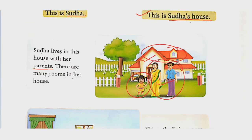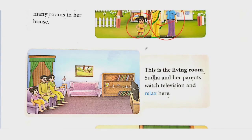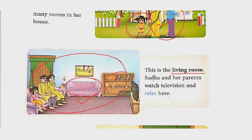There are many rooms in her house. Let's see all those rooms one by one. This is a living room — yeh picture mein jo aapko dikh raha hai yeh living room hai. Yahan pe sofa hai, cabinet hai, TV hai. Sudha and her parents watch television and relax here — living room mein woh sab TV dekhte hain aur aaram karte hain.